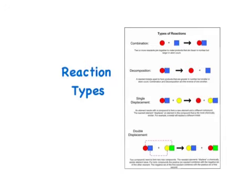In our last notes, we talked about what chemical reactions are and how to balance them. In these notes, we're going to talk about the different types of chemical reactions that can occur.